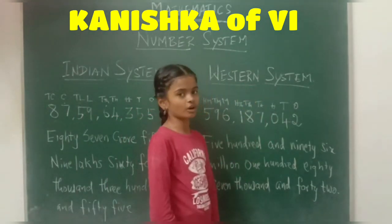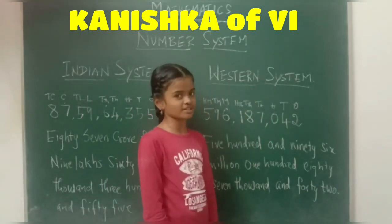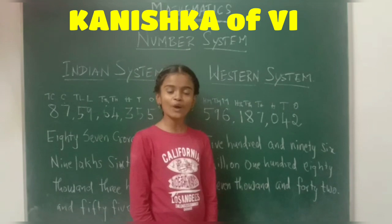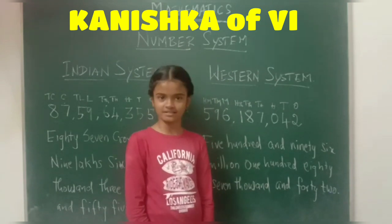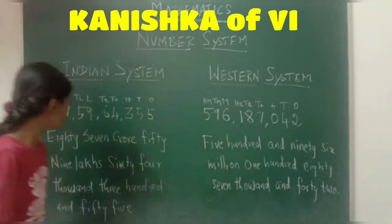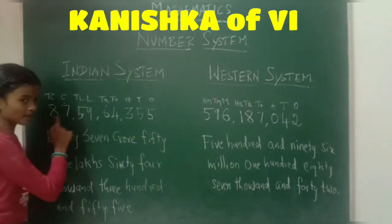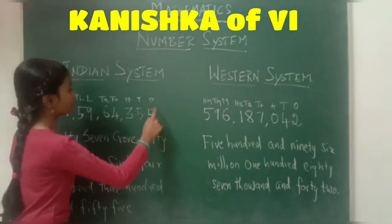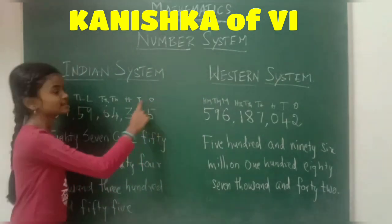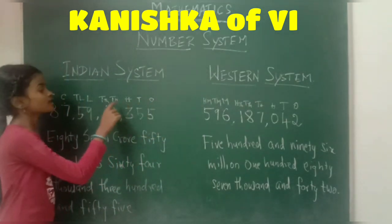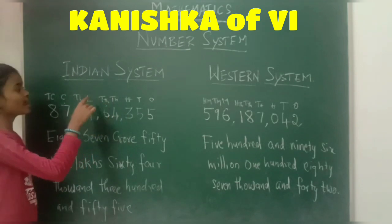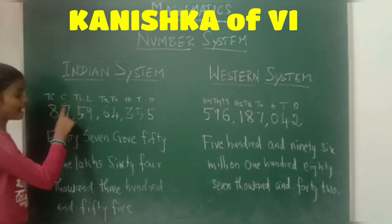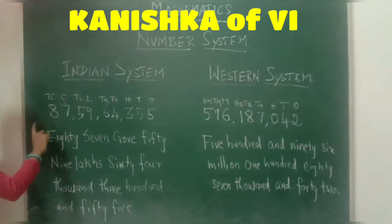Western system is also called as international system. Now, we shall see how to represent a number in Indian system. The place values are ones, tens, hundreds, thousands, ten thousand, lakh, ten lakh, crore and ten crore.